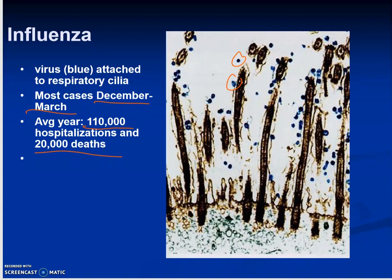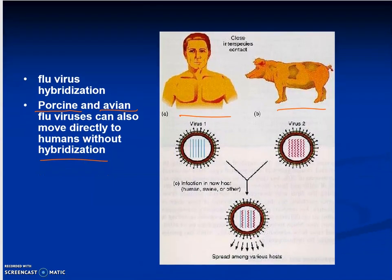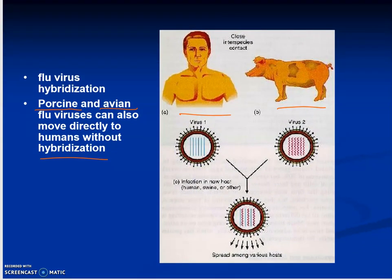Flu viral particles are shown here in blue — they attach to respiratory cilia. Most cases occur in the winter months, roughly December through March. In an average year, there are about 110,000 hospitalizations and about 20,000 deaths from the flu. Flu viruses can also hybridize: virus one from a human and virus two from a pig can combine to make a hybrid virus.